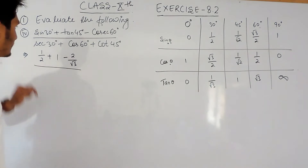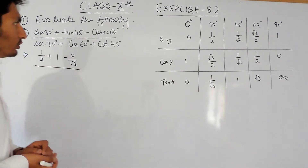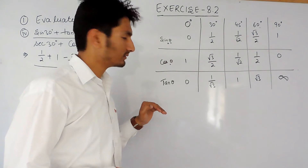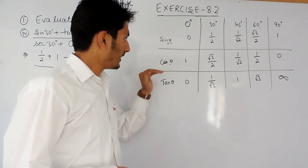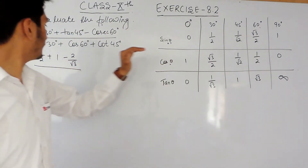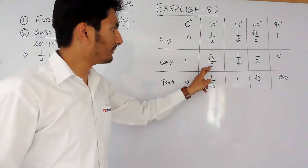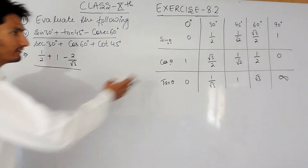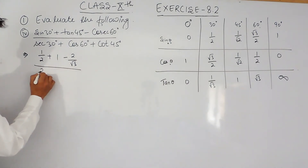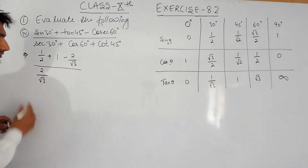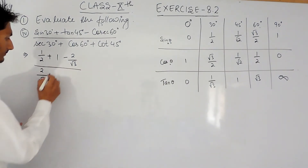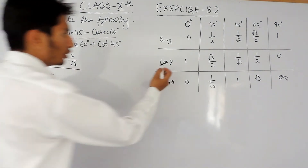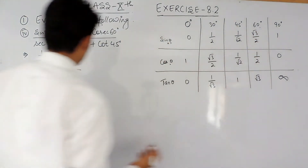And cos 30 is root 3 by 2, which means sec 30 will be the inverse of this value, that is 2 by root 3. Plus cos 60, which is 1 by 2.